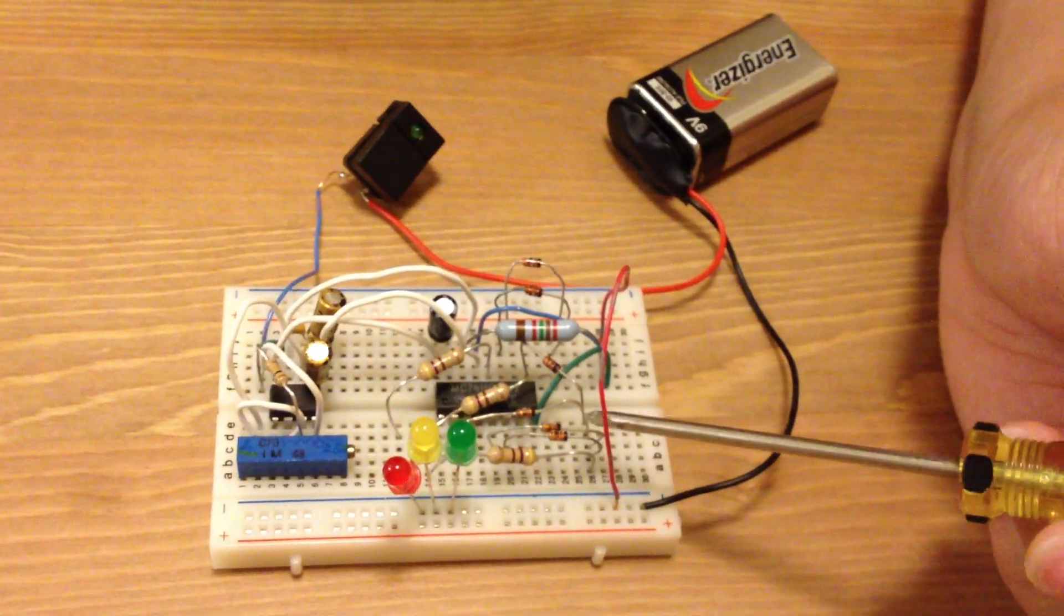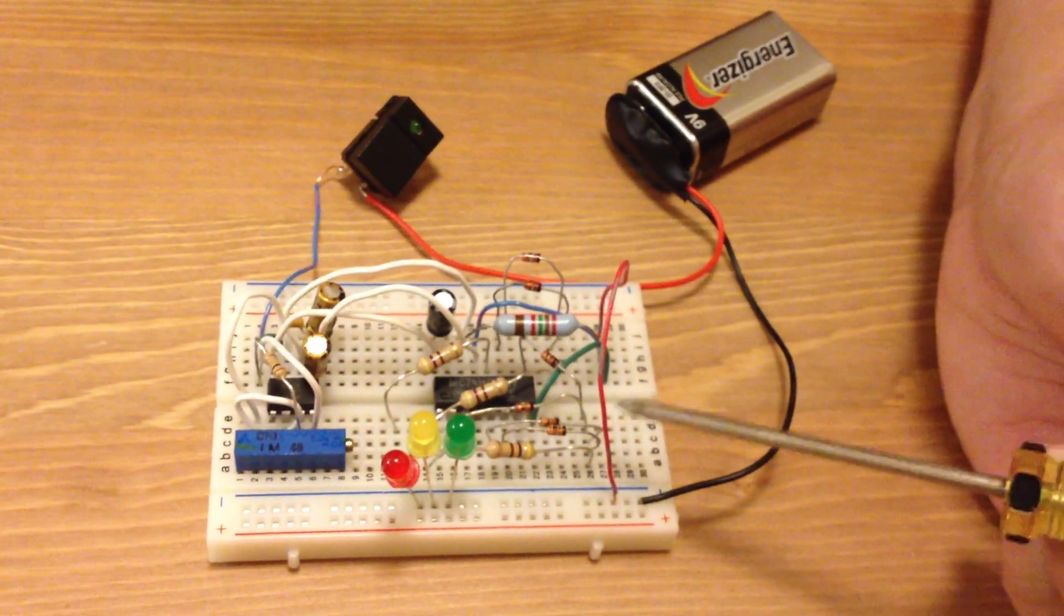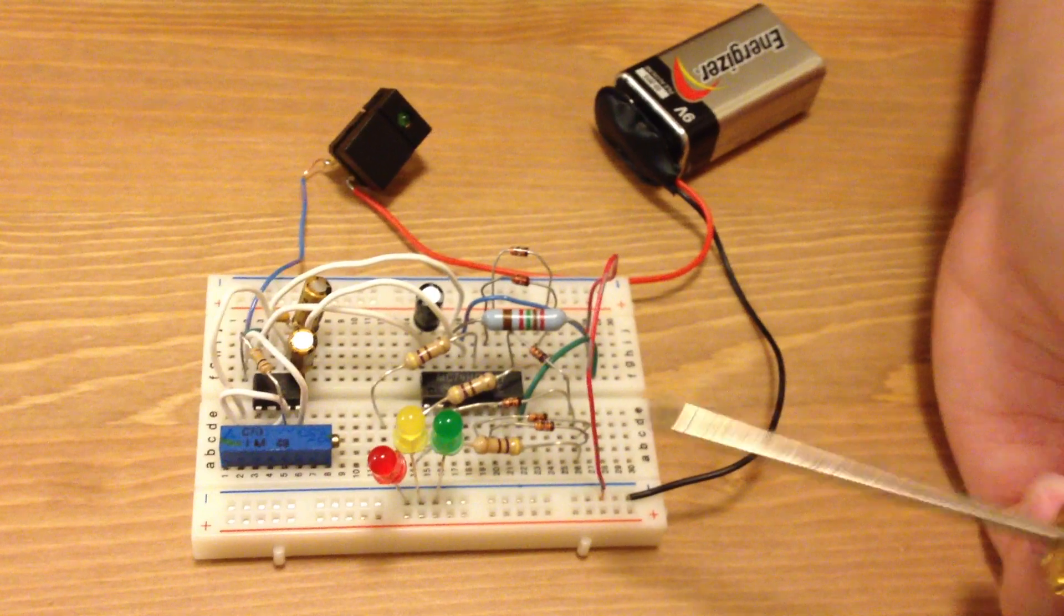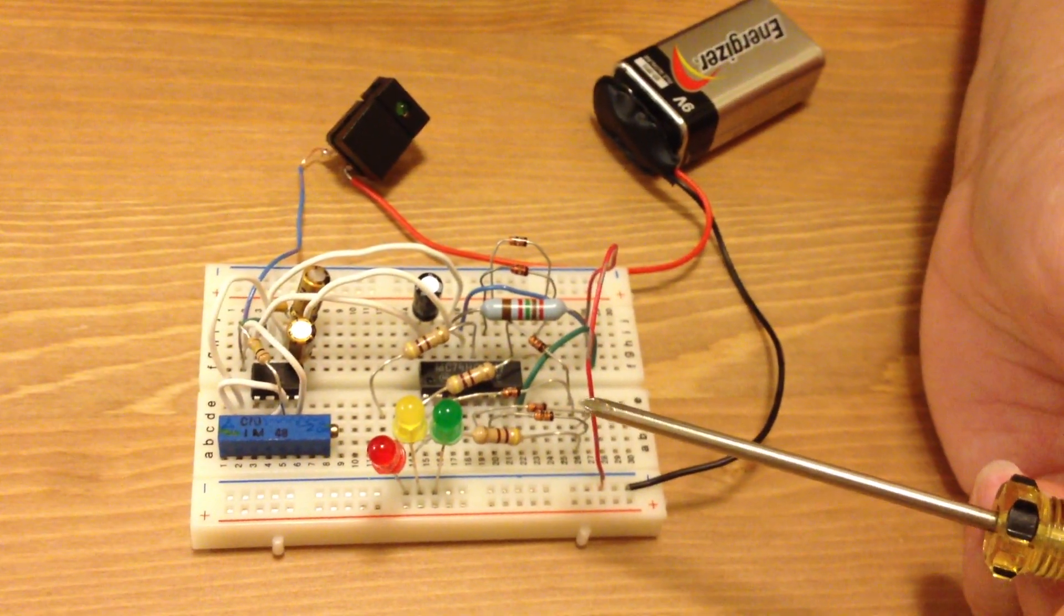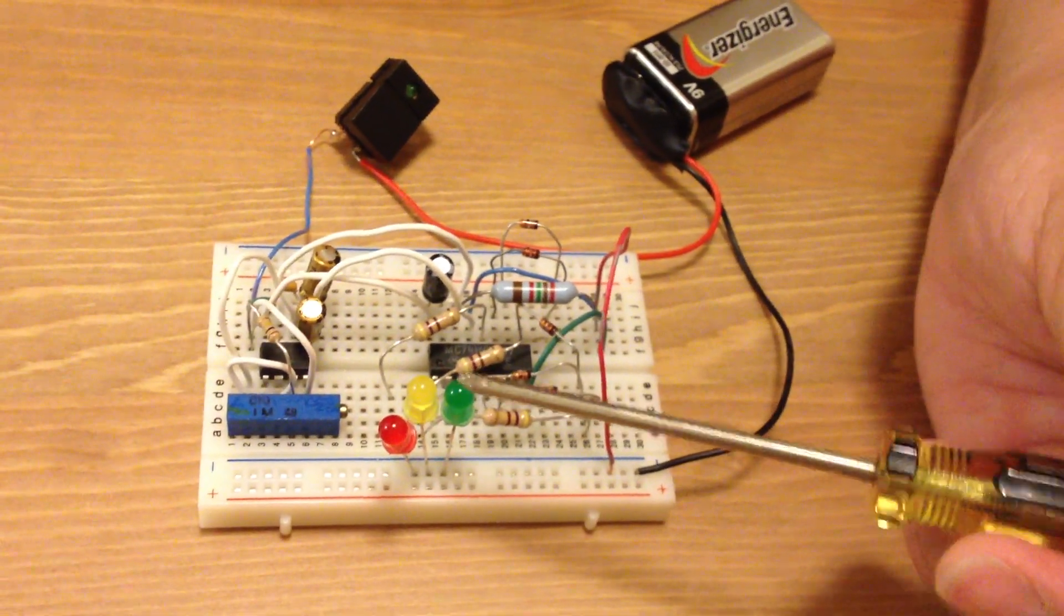And we also have here six diodes right here, these little resistor-like components. The main purpose of them is to control the output of the counter and to make sure the correct light is on.